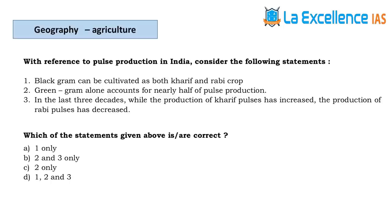The next question is about pulse production in India. Statement 1 — black gram can be cultivated as both Kharif and Rabi crop. Yes, most pulses can be grown in both seasons. When statement 1 is true, eliminate other options. Statement 2 — green gram alone accounts for nearly half of pulse production — be careful whenever 'alone' appears.